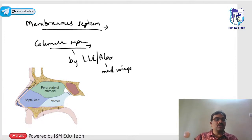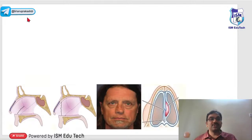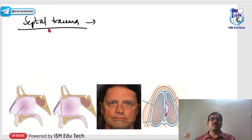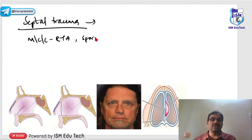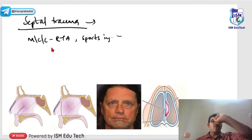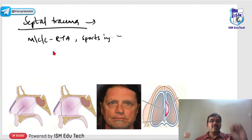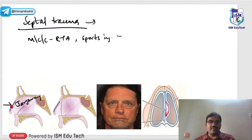Coming to septal trauma. The most common cause is road traffic accidents; other causes include sports injuries and interpersonal altercations under alcohol influence. If the blow is from the front, there will be a Jarjave type of fracture. If the blow is from above, the fracture line runs vertically — this is called Chevalet. If the blow is from the side, there is a C-shaped deformity.